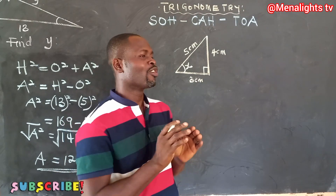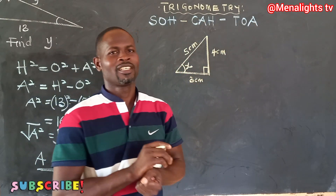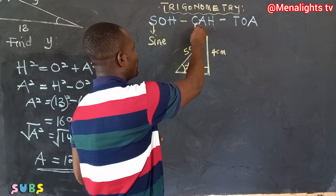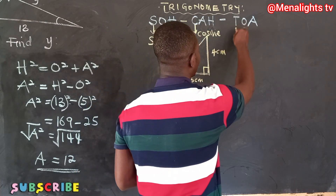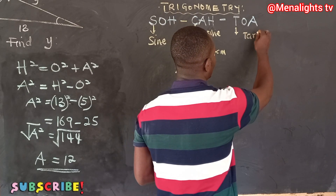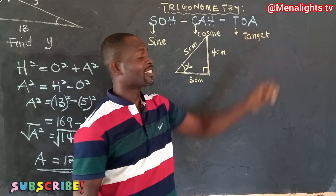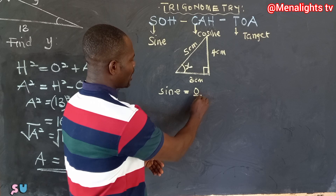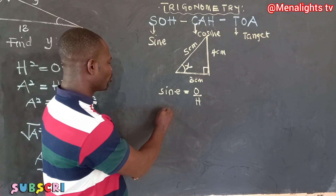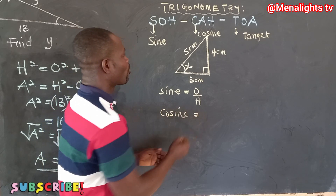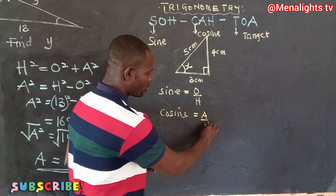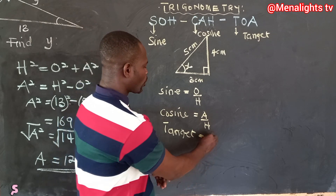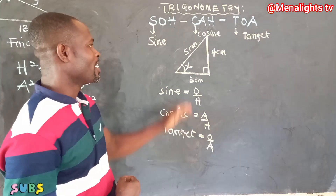On the board we have the trigonometric ratios SOH-CAH-TOA. The S stands for sine, the C stands for cosine, and the T stands for tangent. Sine means opposite over hypotenuse — that's why you have the O and H. Cosine means adjacent over hypotenuse. And tangent means opposite over adjacent.